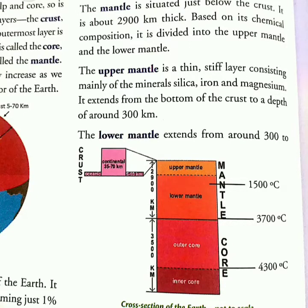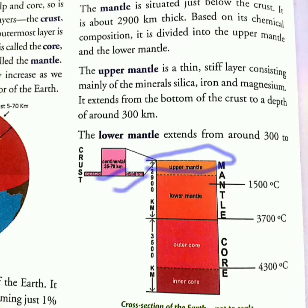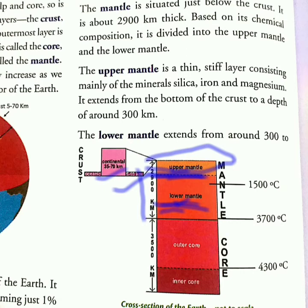Now let us understand the crust, the mantle, and the core with the help of the diagram given in our book. In the diagram, the thin black line represents the crust. The crust under the continent is 35 to 70 kilometers, while under the ocean it is 5 to 10 kilometers. The light orange and dark orange portion of the diagram represents the mantle, which extends to 2900 kilometers. The light orange represents the upper mantle while the dark orange represents the lower mantle. Where the mantle ends, the core starts — it extends to about 3500 kilometers, with the upper core being 2300 kilometers and the inner core 1200 kilometers.